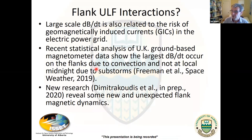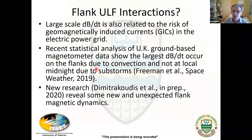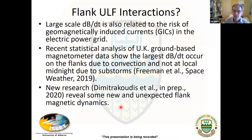I want to briefly show work by Stavros Dimitrakoudis in our group, looking at whether convection — especially on the flanks of the magnetosphere — can be associated with large magnetic fluctuations and large dB/dt. Why care? If you're interested in space weather effects, these large dB/dts, if they close in the ionosphere, could generate dB/dt on the ground. Many people focus on substorms and the nightside as a large driver of GICs in the power grid. But this work suggests the flanks might be an under-recognized important region for space weather effects.